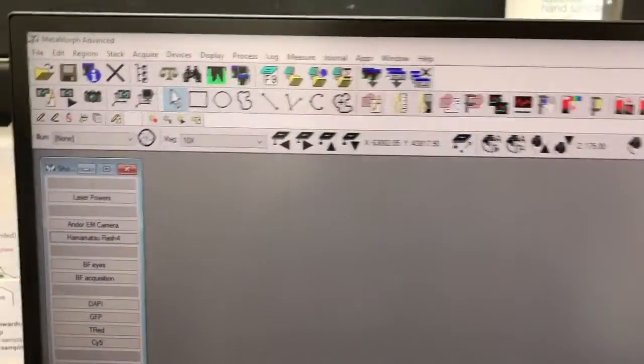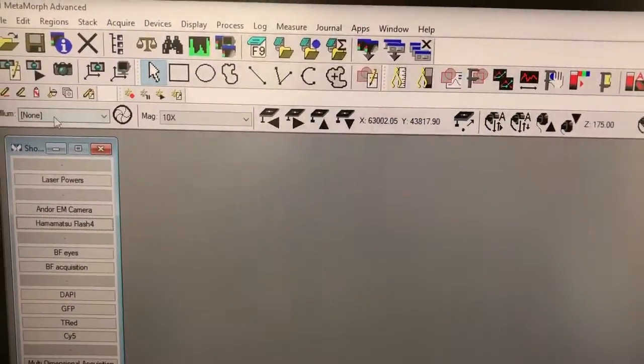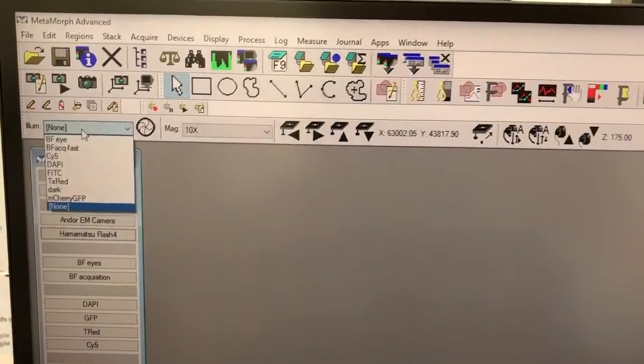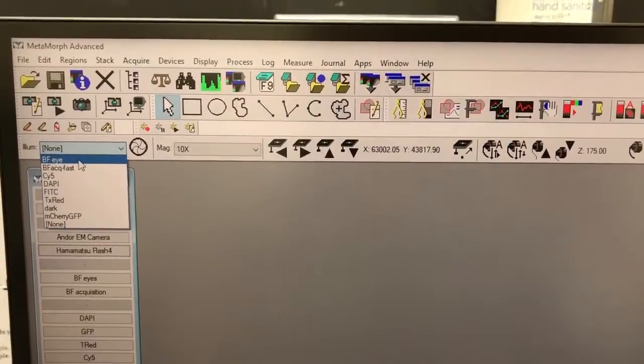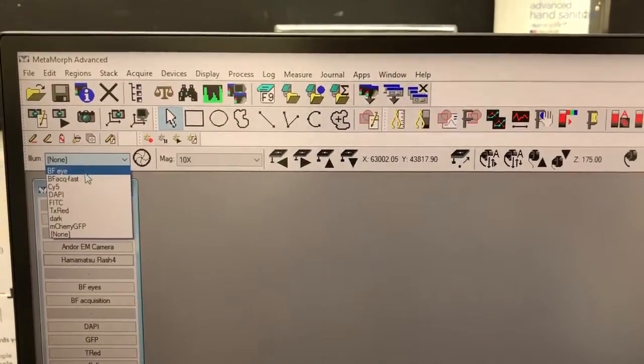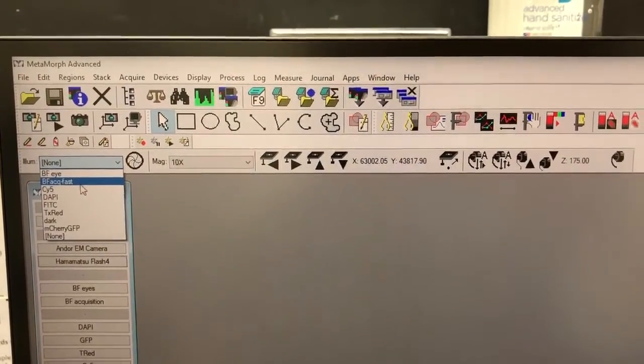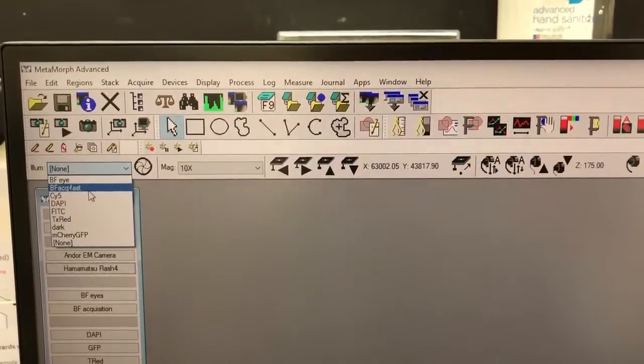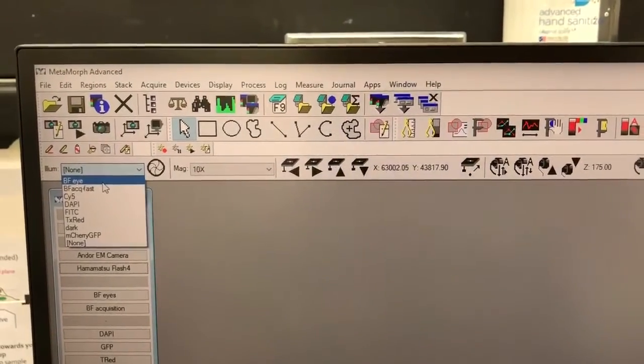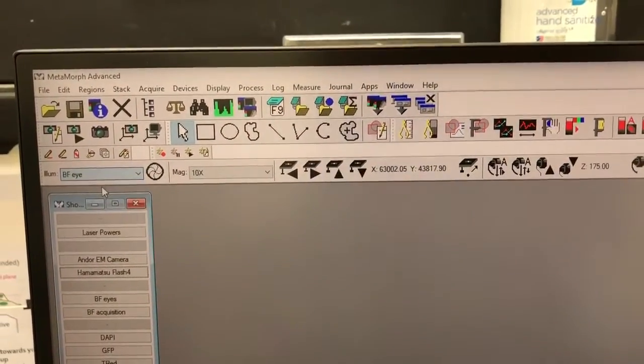So if we go here to Metamorph, if you look at the top left where it says illumination, you'll see that there is a setting called brightfield eye and a brightfield acquisition fast. Brightfield acquisition fast is what you will use with the camera. Brightfield eye, as it says, is for the eyes. So we're going to click that.